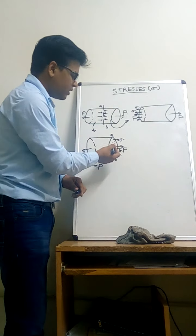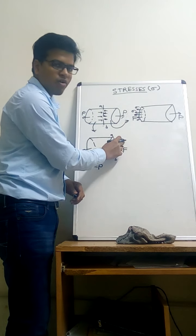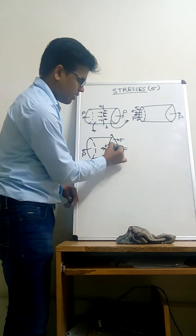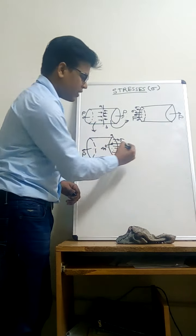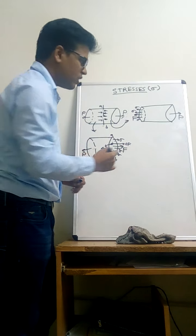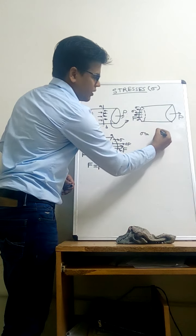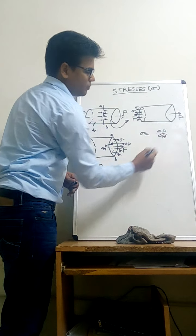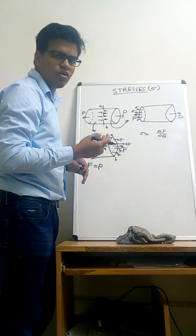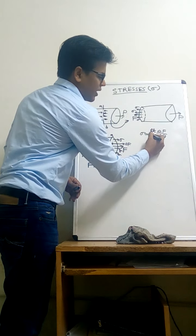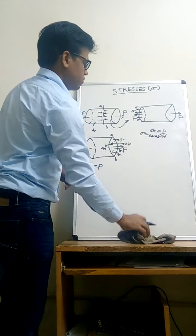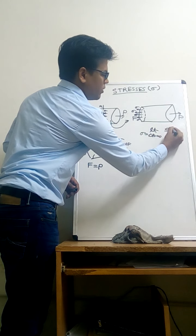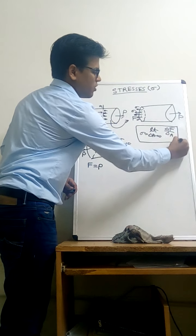Let us define stress more specifically at a small point, since it is defined for a point. Let us take a differential element delta A, and let delta F be the internal resisting force acting on this element. According to the definition of stress, the stress on this element will be delta F upon delta A. Since it is a point, the area of the point tends to zero. So we take the limit as delta A tends to zero of delta F upon delta A. This is the standard expression for stress.